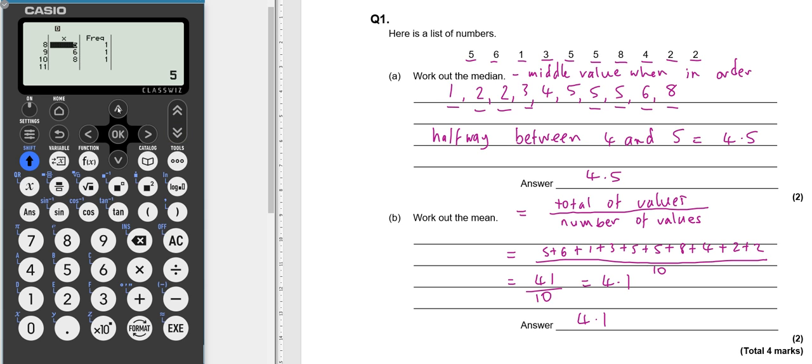So because there are 10 numbers, the median will be between the fifth and sixth numbers. So it's between 4 and 5, so it should be 4.5. But what we can do is we can press the execute button and then the execute button again on one variable results.